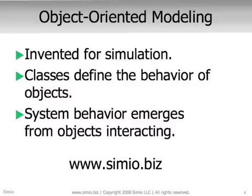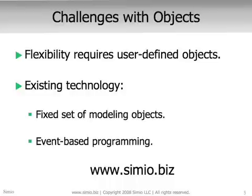A little history on object-oriented modeling. First of all, it was invented for simulation. The simulation tool called Simula was the first object-oriented programming tool in the world. The basic concept of object-oriented is that you have classes that define behavior for objects, and then those classes are placed together in your model, and the system behavior really emerges from those objects interacting. The challenge with the object approach is that to have a really flexible tool requires a notion of user-defined objects — that is, the user needs to be able to create their own objects and add those to the library.